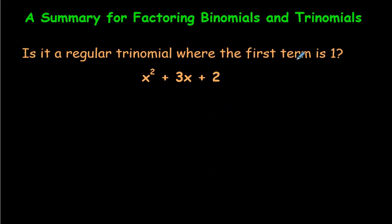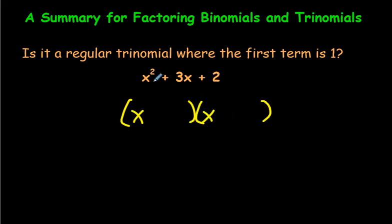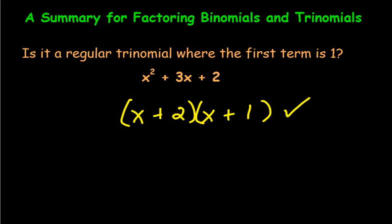Here we have a regular trinomial where the first term is 1. We remember from the very first question: we just take the x, put it in both brackets, and ask what multiplies to make 2 but adds to get 3 — and you'd say 2 and 1, just like at the beginning. The signs are all positive, and we're good to go. That's a regular trinomial where the first term is 1.